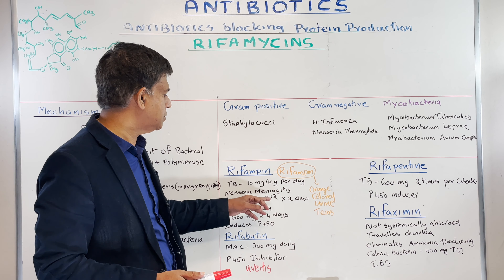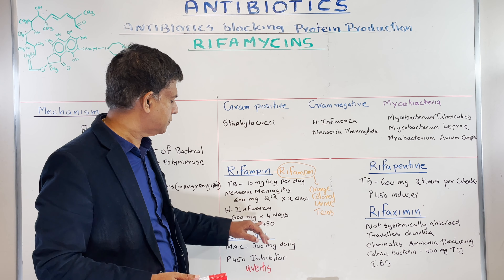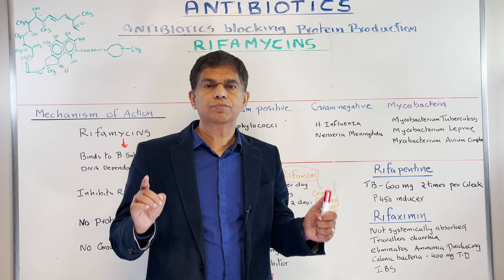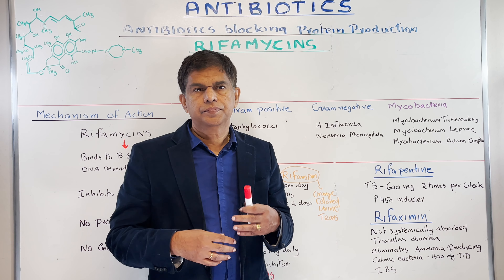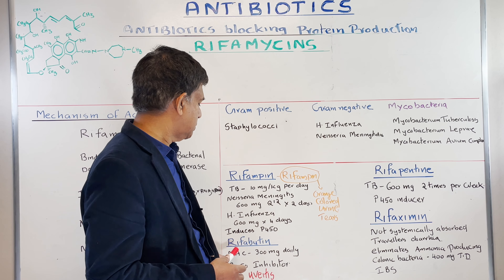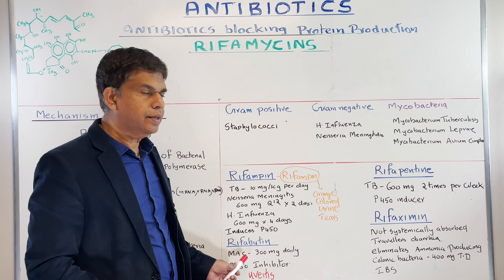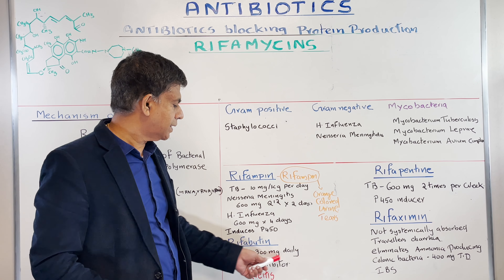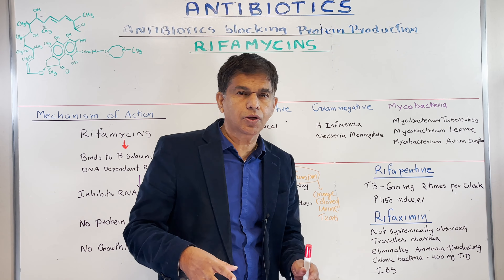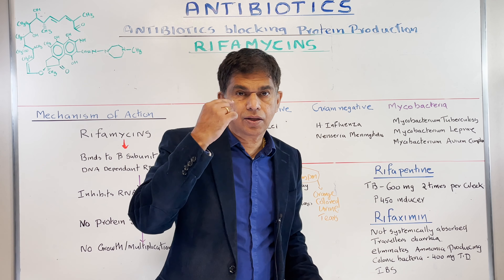There are four drugs we need to know. The first one is rifamycin — I've written it in orange color. Why? Because it produces orange-colored urine and orange tears. Any body secretion is going to turn orange — even contact lenses can change color. So if you prescribe rifamycin, warn the patient about the orange color, otherwise it's going to cause a lot of anxiety. The dose for TB is 10 mg per kg per day; for Neisseria meningitidis, 600 mg per day for 2 days; for H. influenzae, 600 mg for 4 days.